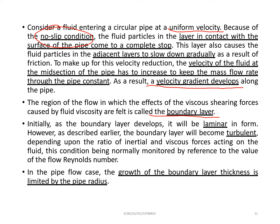As the boundary layer develops, it will be laminar in form, so flow regime is laminar. However, the boundary layer will become turbulent depending on the ratio of inertial and viscous forces acting on the fluid. And this can also be monitored using the Reynolds number. When Reynolds number is low, then laminar. And then suddenly when Reynolds number increases, it means that the flow regime becomes turbulent.